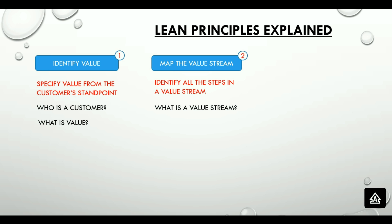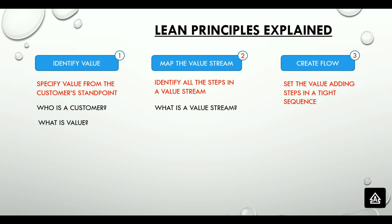Moving on to the next step, which is creating flow. To create flow, we need to knit or connect the value-adding steps in the right sequence and in a tight sequence. This will result in a smoother call flow without any disruptions or delay to the customer. Mapping the value stream in the previous step actually helps to identify those loose ends which need repair. Waste elimination also plays an important role here. Proper implementation of technologies such as IVR (interactive voice response), skill-based routing of calls, CTI (computer telephony integration), etc., also helps in creating a better flow.